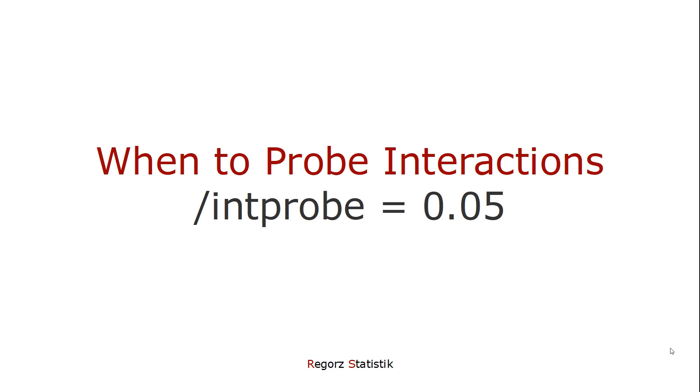Next, you could change when PROCESS probes interactions. The default value is 0.1. So with the p-value for an interaction smaller than 0.1, you will get simple slopes. And with the int probe parameter, you could change that. If you want simple slopes, regardless of the result of the significance test for the interaction, you could set this parameter to 1. Then you always get simple slopes.